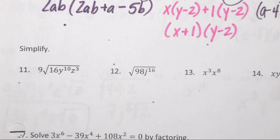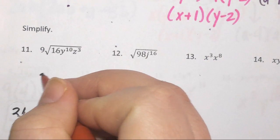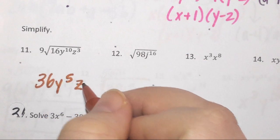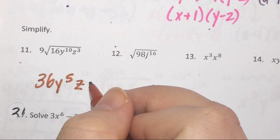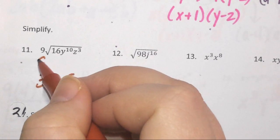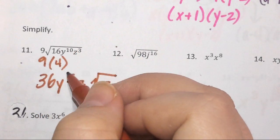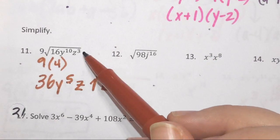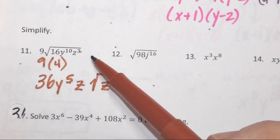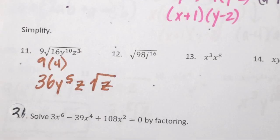Ma'am. 36y to the 5th, then what? Then what? What's left? Okay, so I know the square root of 16 is 4, so 9 times 4, that's how she got 36. 10 divided by 2 is 5, that's how she got y to the 5th. Z to the 3rd was an odd exponent, so there was a z left under the house. Z squared divided by 2 ended up being z to the 1, we don't write the 1. Number 11 was the easy one.